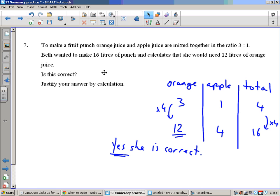Another ratio question: To make a fruit punch, orange juice and apple juice are mixed together in ratio 3 to 1. Beth wanted to make 16 liters of punch and calculates that she would need 12 liters of orange. Is she correct? So the ratio of 3 to 1, three parts orange, one part apple, in total that'd be four parts. She wants to do 16 liters, so she's got four times as much as the original total, so she'll need four times as much apple juice, four times as much orange juice. So she does need 12 liters of orange. So yes, she is correct.